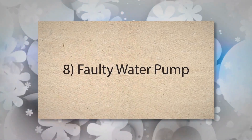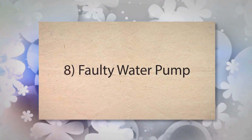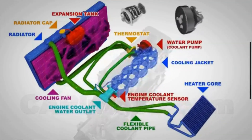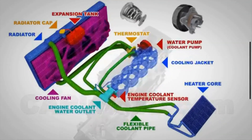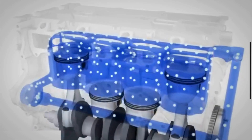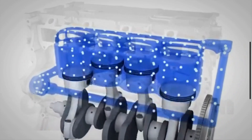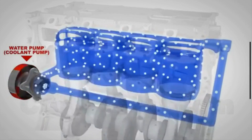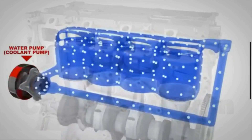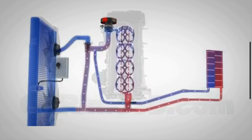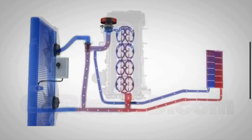8. Faulty water pump — the water pump circulates coolant through the engine and radiator. If the water pump is not operating efficiently, the coolant flow may be insufficient. This insufficient coolant flow may lead to poor heat transfer and prevent the engine from reaching its optimal operating temperature.